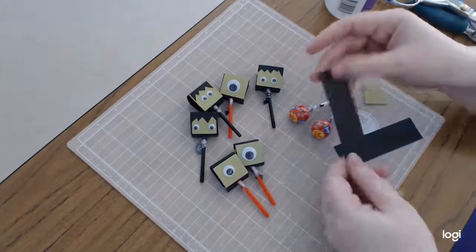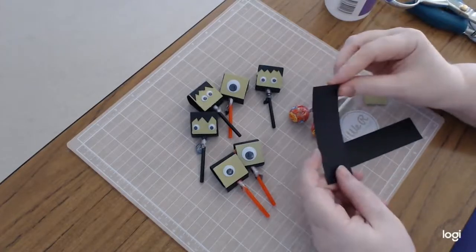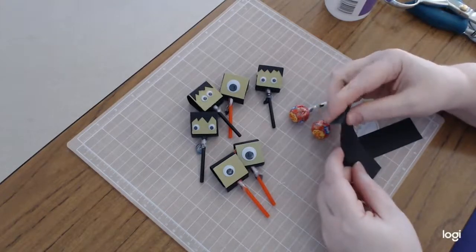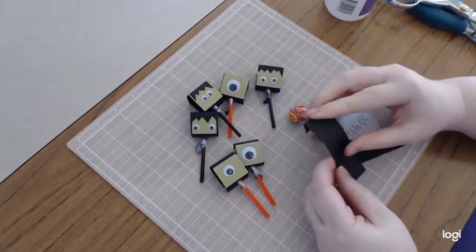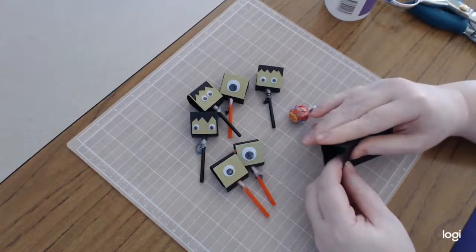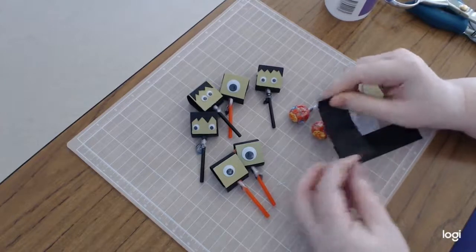So what you can start with is a 4 inch by 1 and 1/8 of an inch piece of cardstock. You score it at half, 1 and a half, 2 and a half, and 3 and a half, and that gives you your shape.